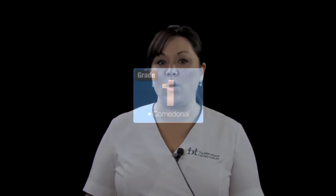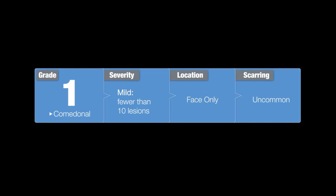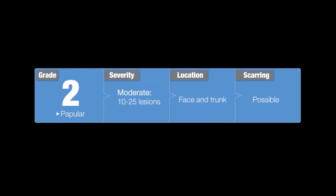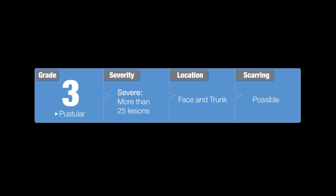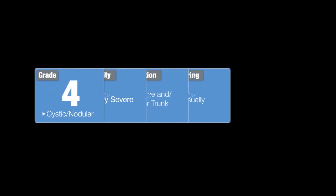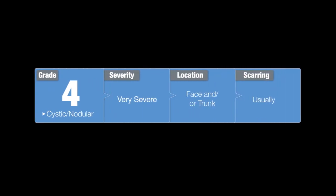Let's explore what lesions you may find within the grades. Grade 1, or mild acne, consists of microcomedones, closed and open comedones, and will have little or no inflammation. Grade 2, or moderate acne, has inflammatory papules or pimples along with comedones. Grade 3 is classified as severe and is commonly known as acne vulgaris and has papules, pustules, and comedones. Grade 4 acne is very severe and is referred to as cystic or nodular acne and has all of the aforementioned lesions along with acne cysts and nodules and causes the most amount of scarring.